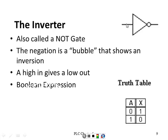I only have one leg, so what are my possible combinations? Two — two raised to the first power is two. I have a zero and a one. If I put a zero in, I get a one out. If I put a one in, I get a zero out. That's the truth table. The Boolean expression — an inverter is: if I have A in, I get A-NOT out.